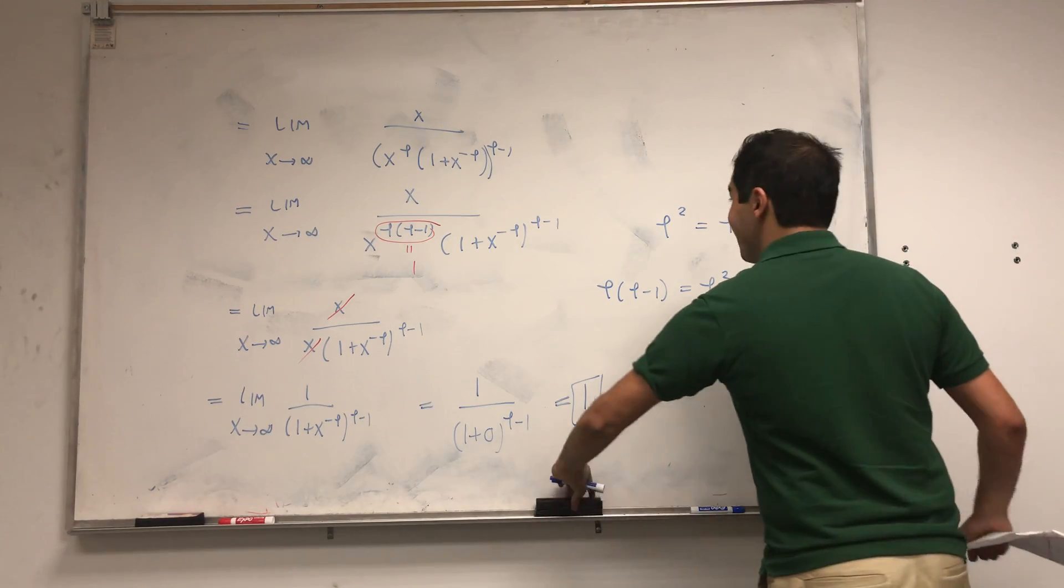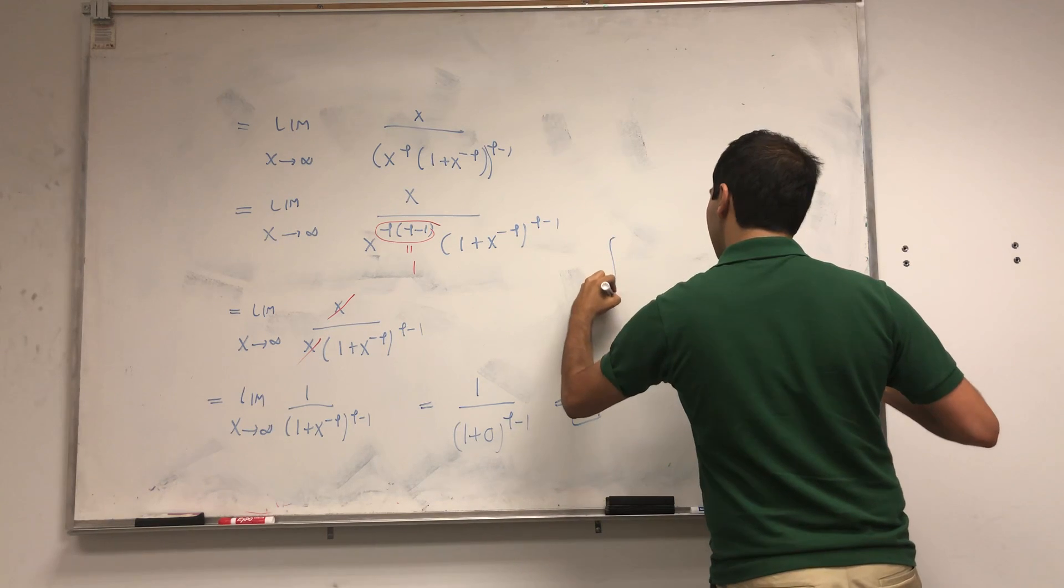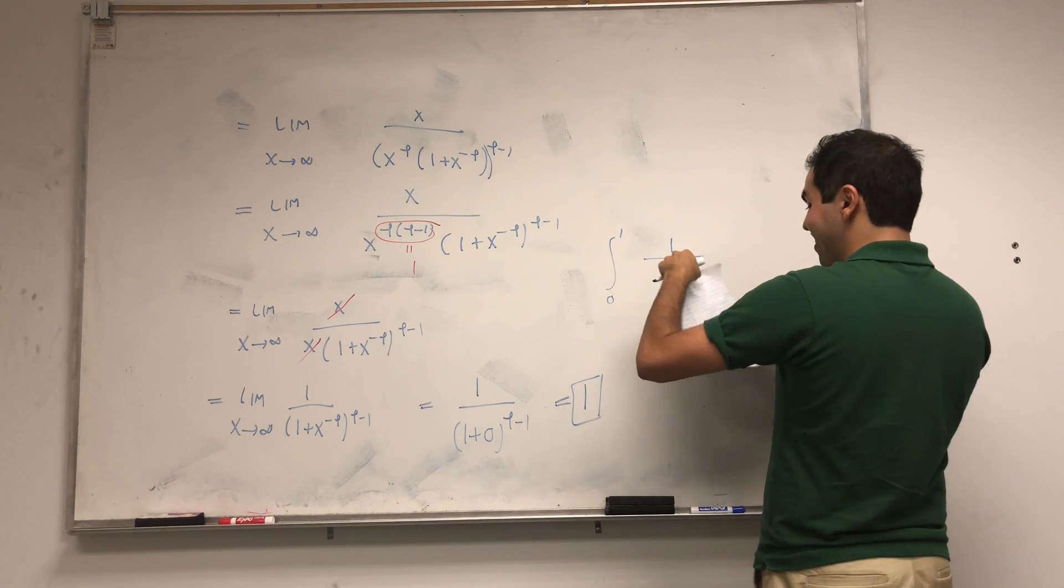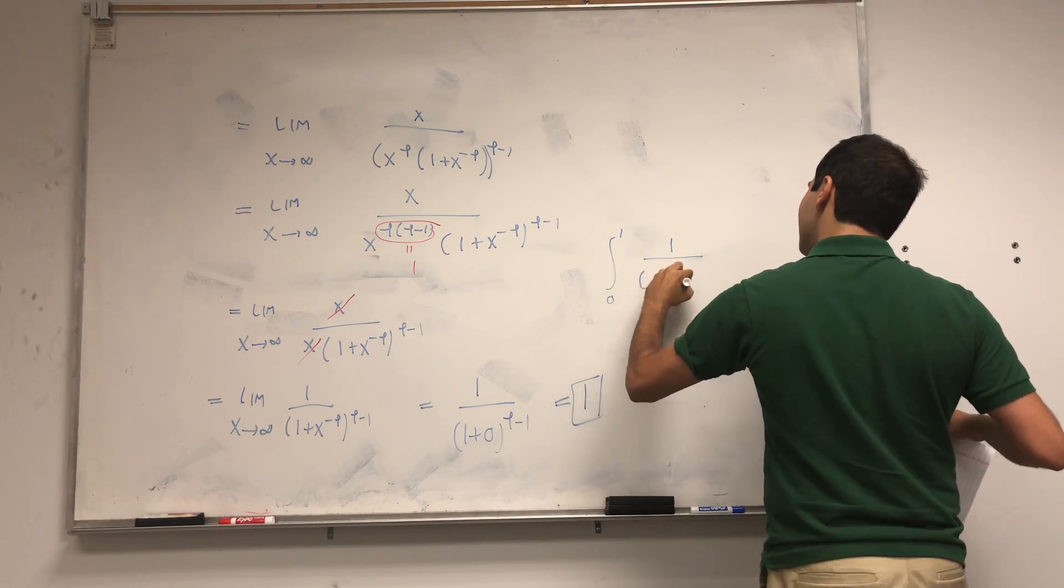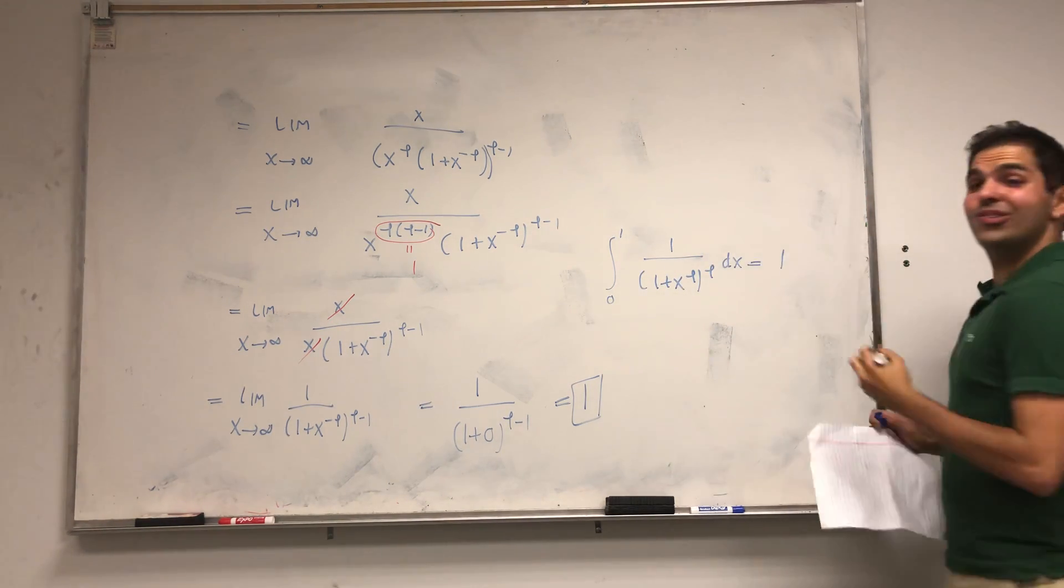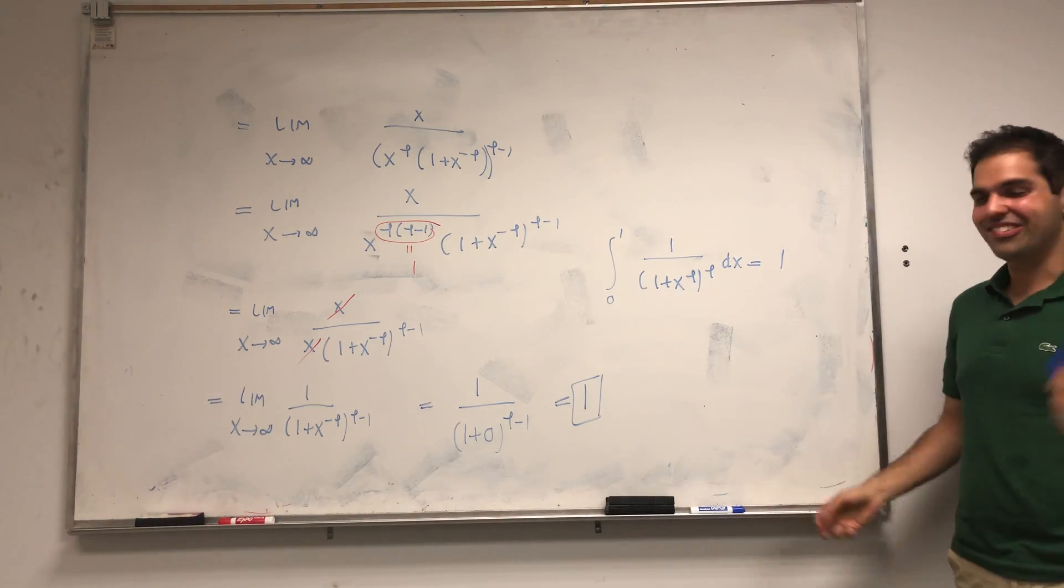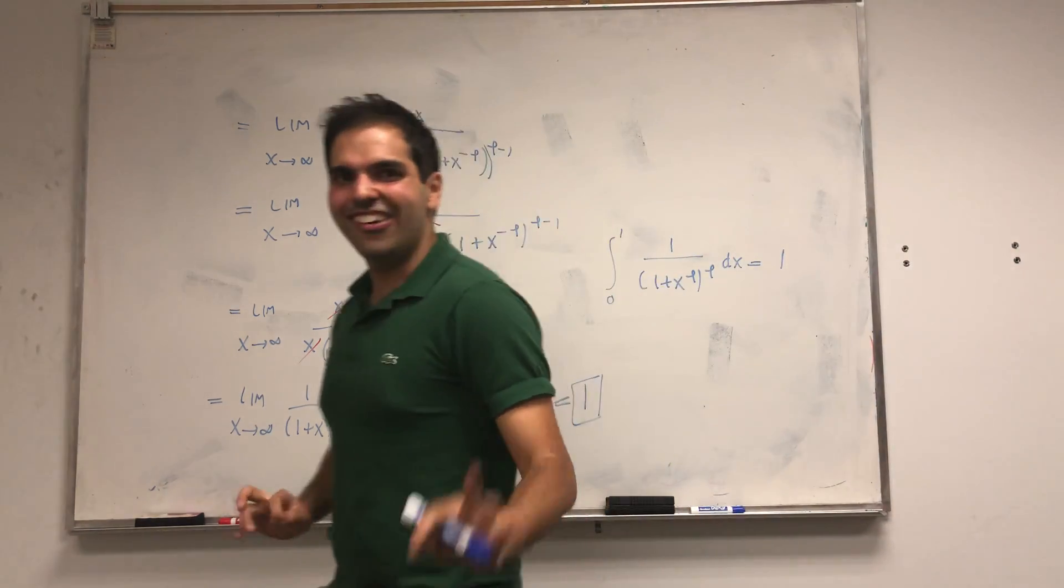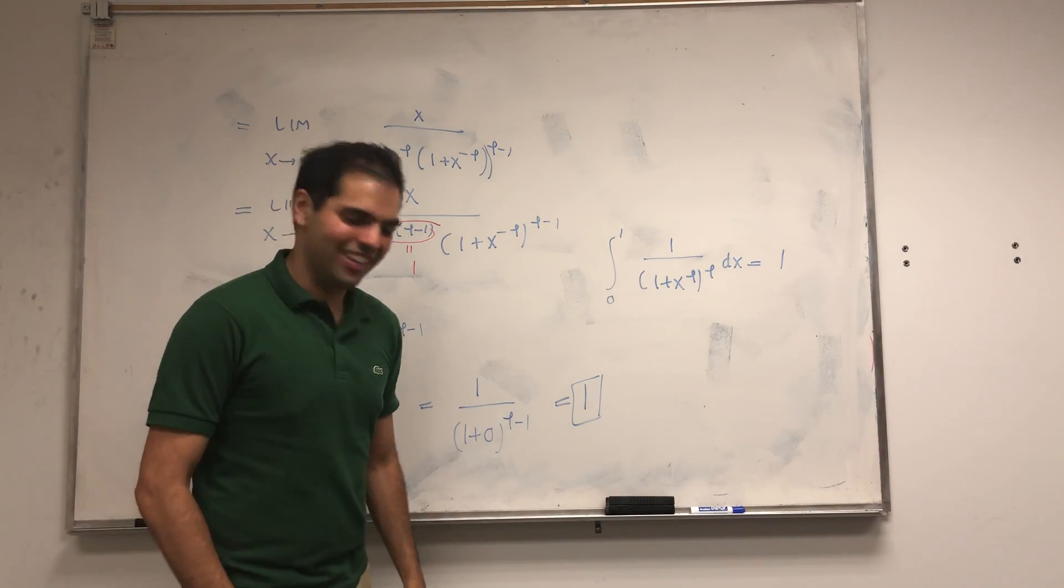So in the end, our golden integral—and it's very pretty—the integral from zero to infinity of 1/(1 + x^phi)^phi dx equals one. Look how pretty it is that this integral equals one. If you like this beautiful integral and want to see more math, please make sure to subscribe to my channel. Thank you very much.